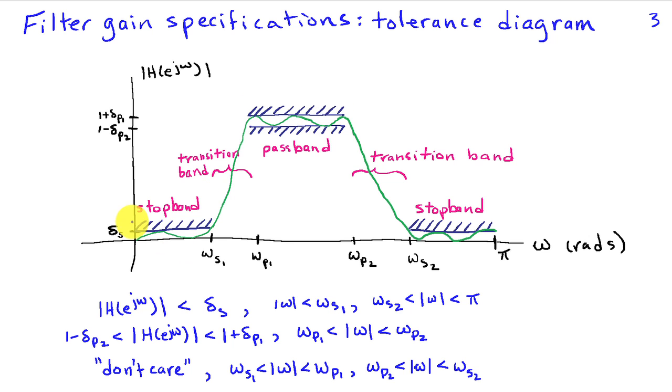Then in the stop band, we're going to say that it has to attenuate signals at least to a level of delta sub s. So the largest the gain can be in the stop band is delta sub s, as indicated by this shaded blue area here in both the lower and the upper stop bands.